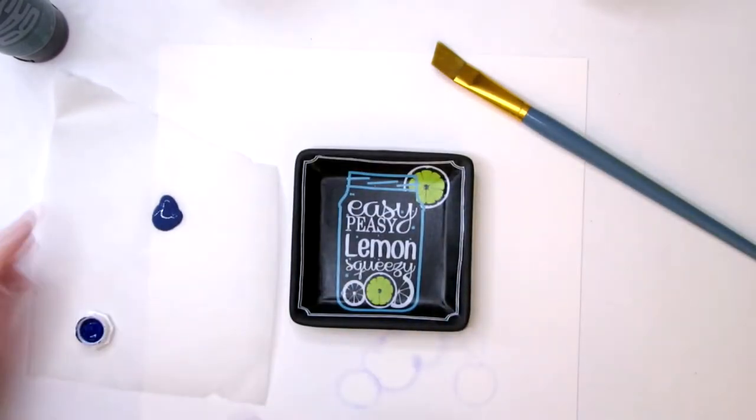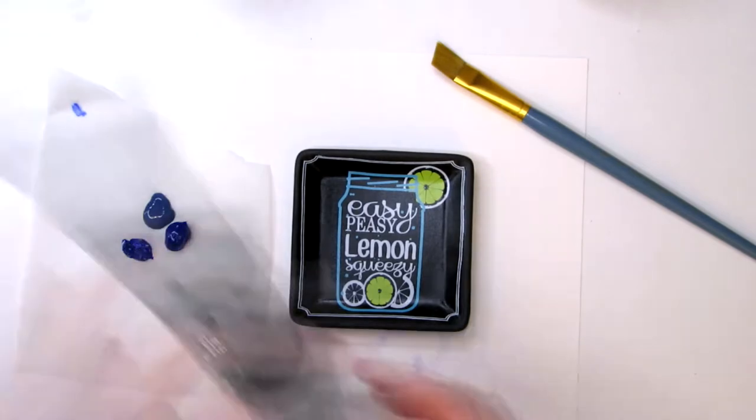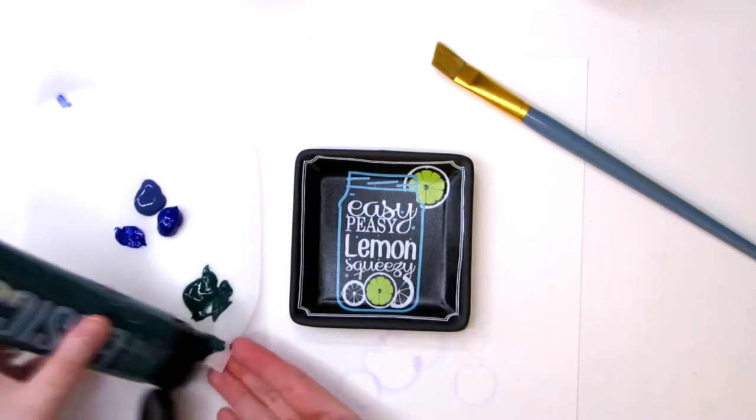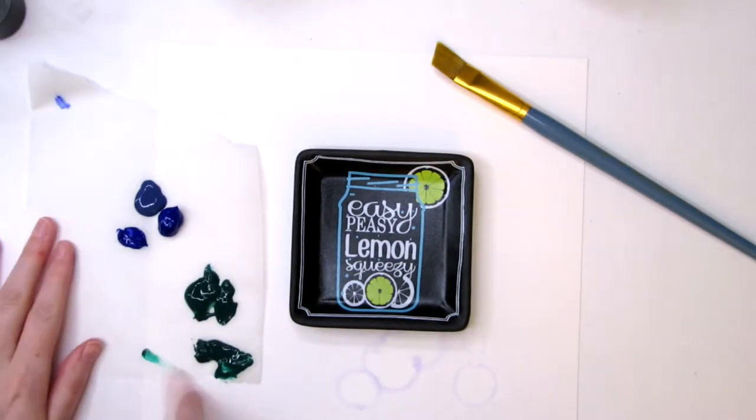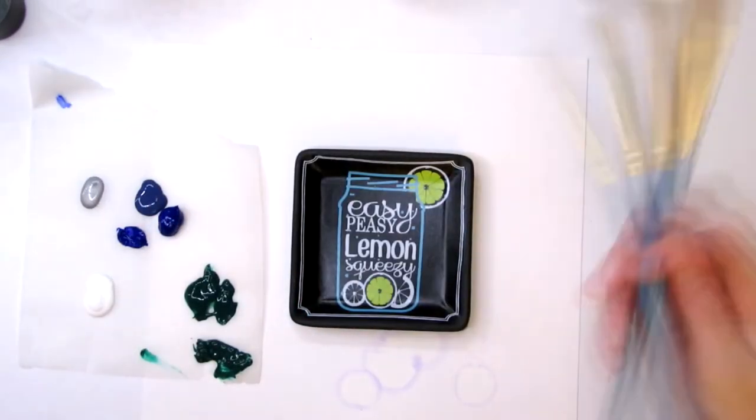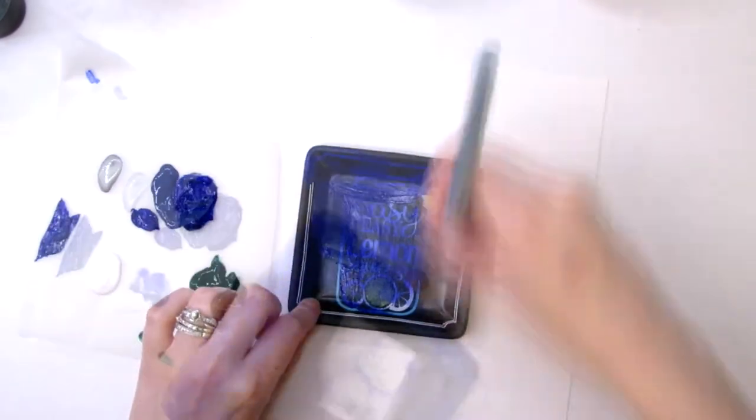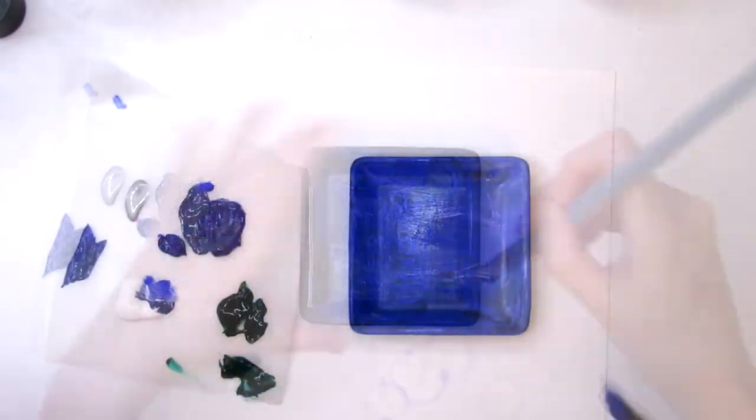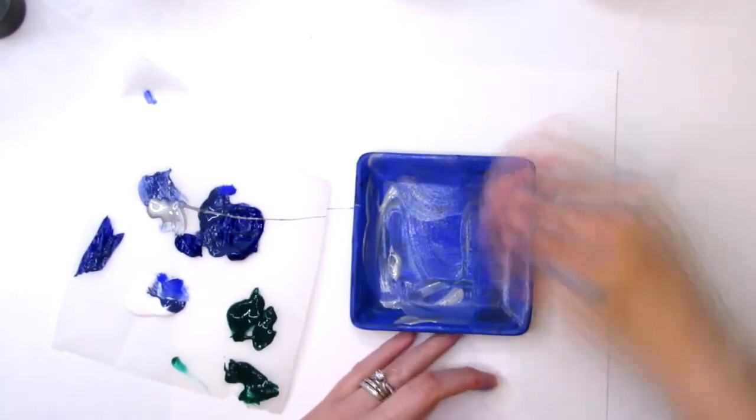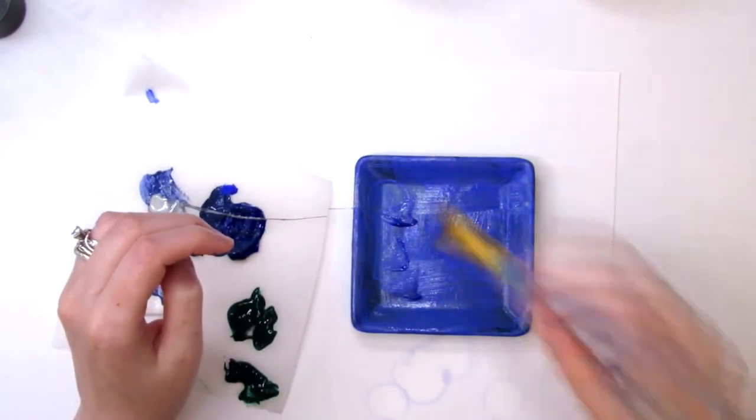With some acrylic paint, I painted it with a few coats of blue to hide the graphic underneath. I added some silver, white, and green to simulate the sea.